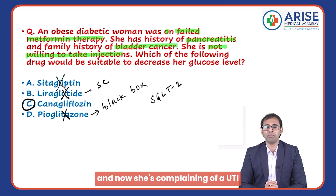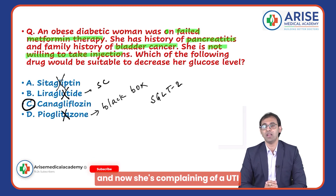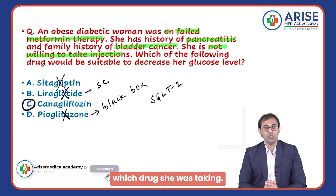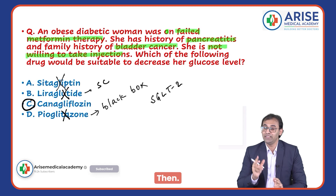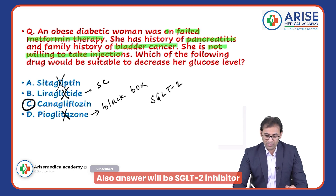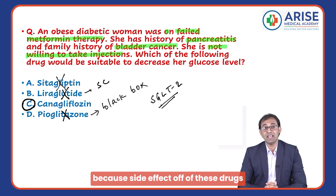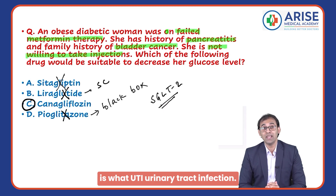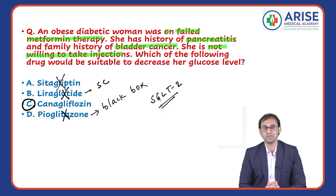Suppose the examiner framed a similar question: a female was on anti-diabetic medications and is now complaining of a UTI — which drug was she taking? The answer would also be an SGLT2 inhibitor, because urinary tract infection is a known side effect of these drugs.